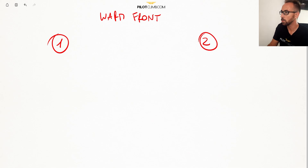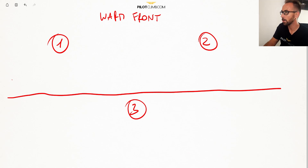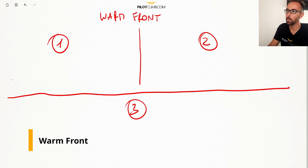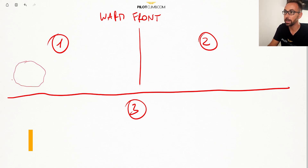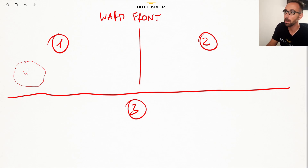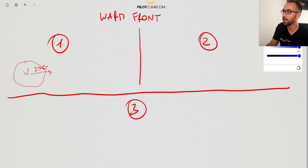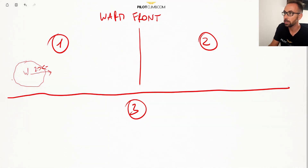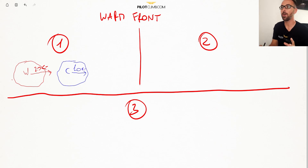Let me divide this into three different scenarios. In the first scenario, we have a warm mass of air — and I'm just talking about a mass of air, not clouds; this is just a bubble we cannot see with our eye — that is moving at 20 knots. Then it will reach a colder mass of air, drawn here in blue, that is moving at 10 knots.